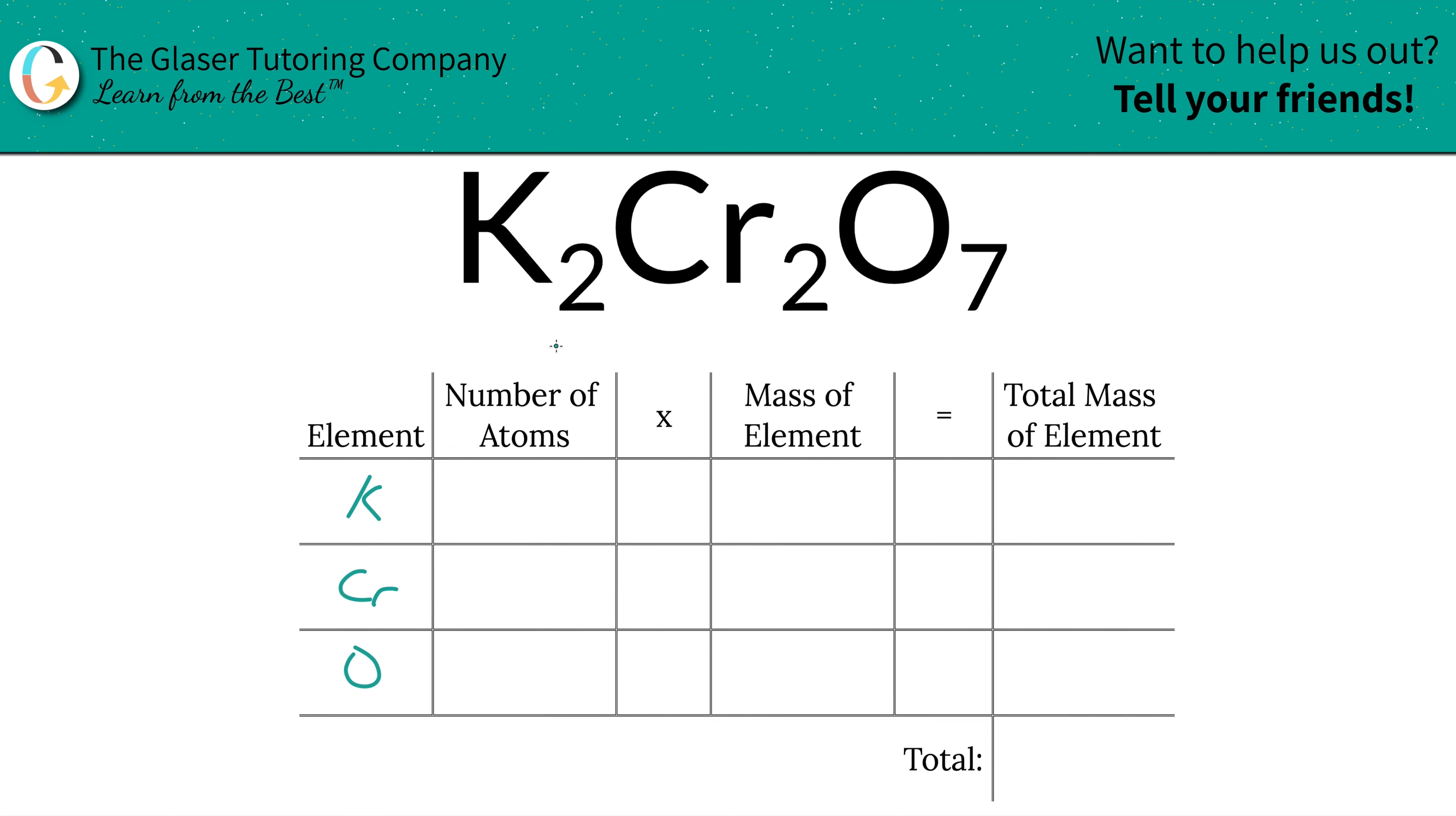Next is then to write down the number of atoms, and that's where the subscripts come into play. So we have two atoms of potassium, two atoms of chromium, and seven atoms of oxygen.